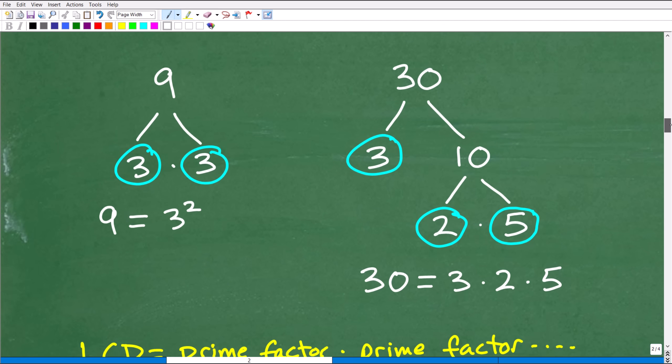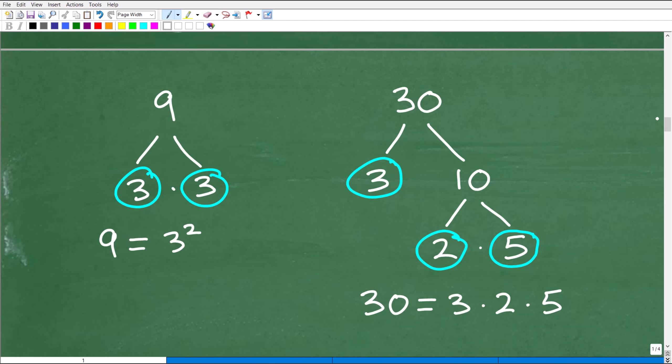Here's our denominators 9 and 30. What you want to do to find the lowest common denominator is you want to factor the respective denominators into their prime factors. Let's take a look at 9. You're going to factor 9. So 9 could be factored as 3 times 3. 3 is a prime number. So we're going to circle that. We can write 9 is equal to 3 squared. You want to write these denominators in terms of their prime factors.